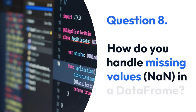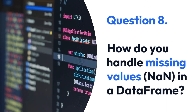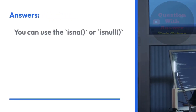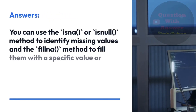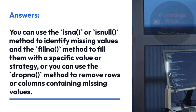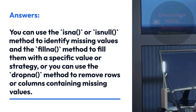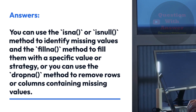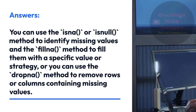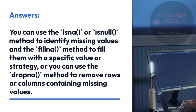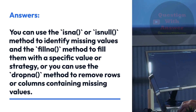Question 8: How do you handle missing values (NaN) in a DataFrame? You can use the isna() or isnull() method to identify missing values, and the fillna() method to fill them with a specific value or strategy. Alternatively, you can use the dropna() method to remove rows or columns containing missing values.